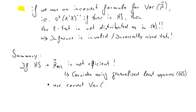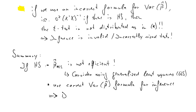Second, when we perform inference we want to use the correct formula for the variance of beta hat. For both of these aspects it is of course crucial that we know whether heteroscedasticity is present. So detection is absolutely crucial.